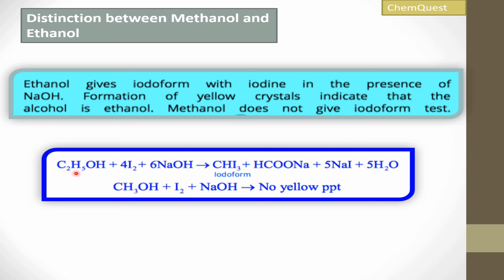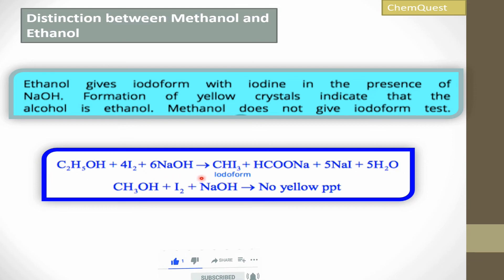So if you have an alcohol, for example ethyl alcohol, you react it with four molecules of iodine and six formula units of NaOH. This gives a yellow precipitate — iodoform — plus sodium formate, plus 5 NaI (sodium iodide), plus 5 H₂O. The formation of iodoform and its yellow color indicates that the alcohol is ethanol.